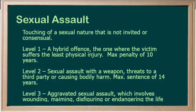Level 2 is sexual assault with a weapon, threats to a third party, or causing bodily harm — this basically involves weapons, threats, or physical injury. It has a maximum sentence of 14 years. Level 3, aggravated sexual assault, involves wounding, maiming, disfiguring, or endangering the life of the victim.